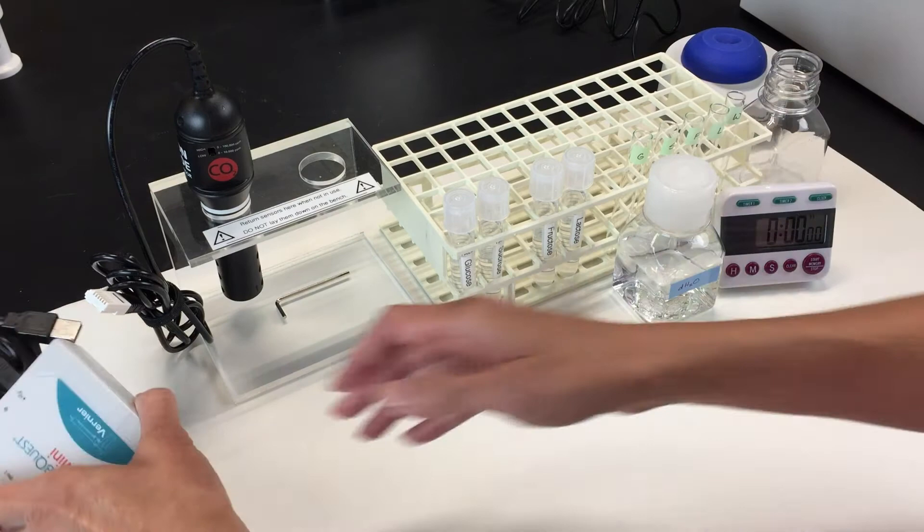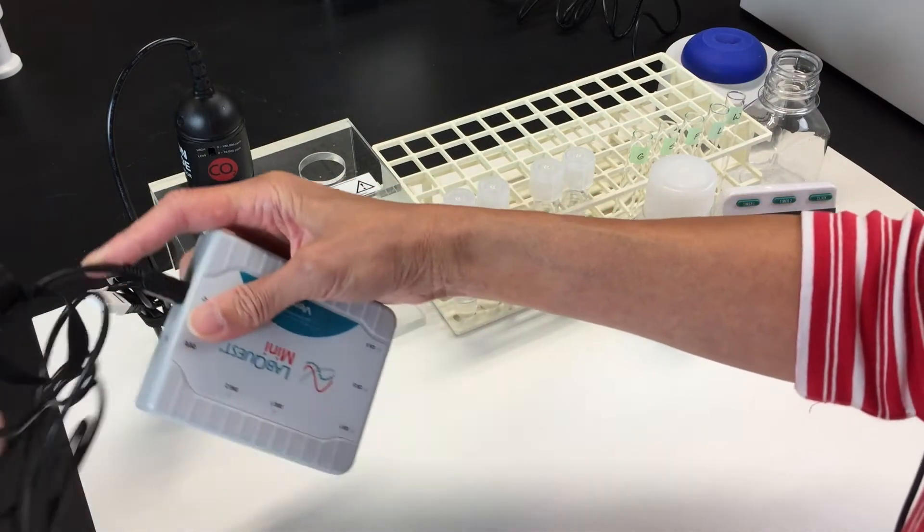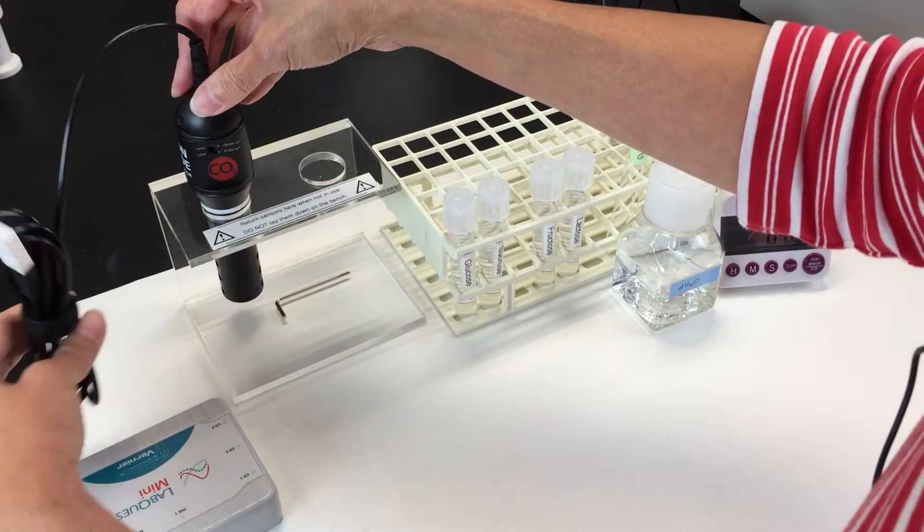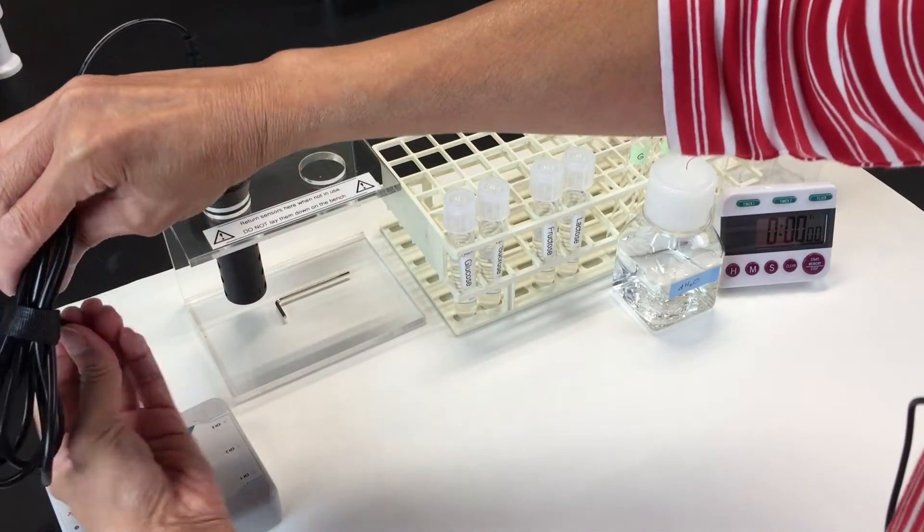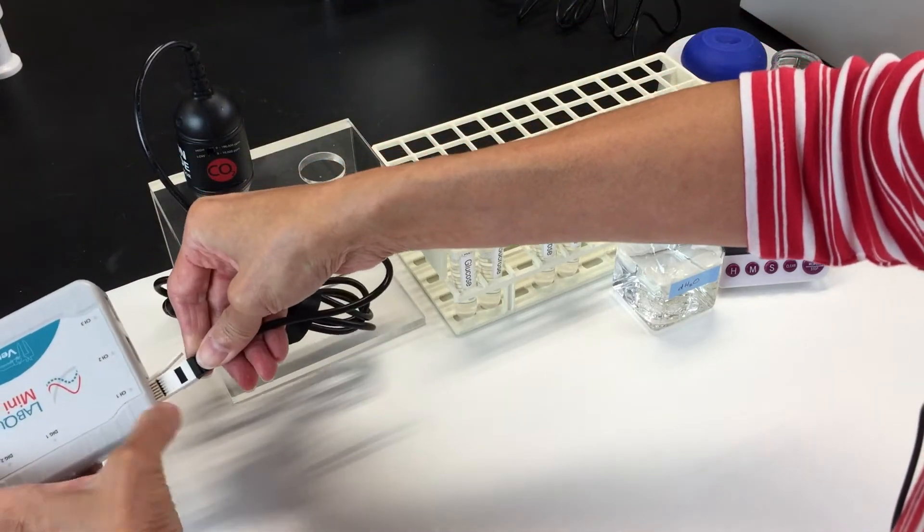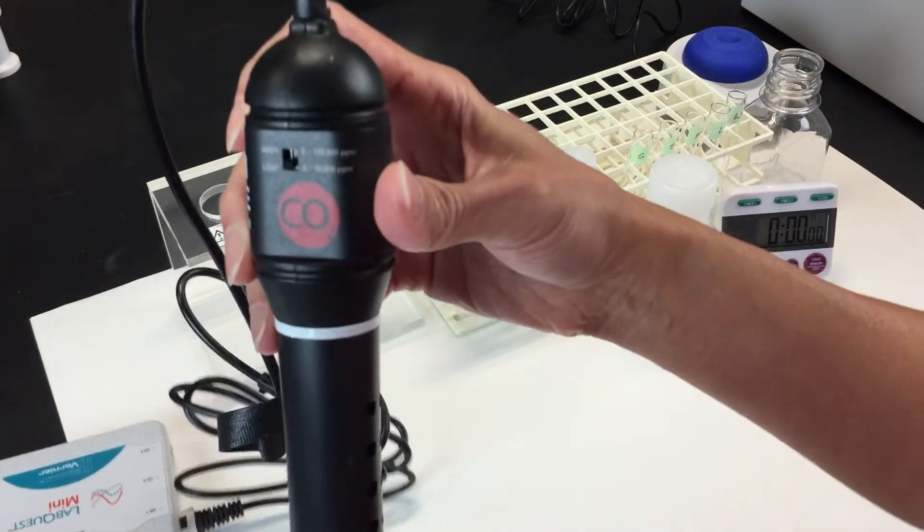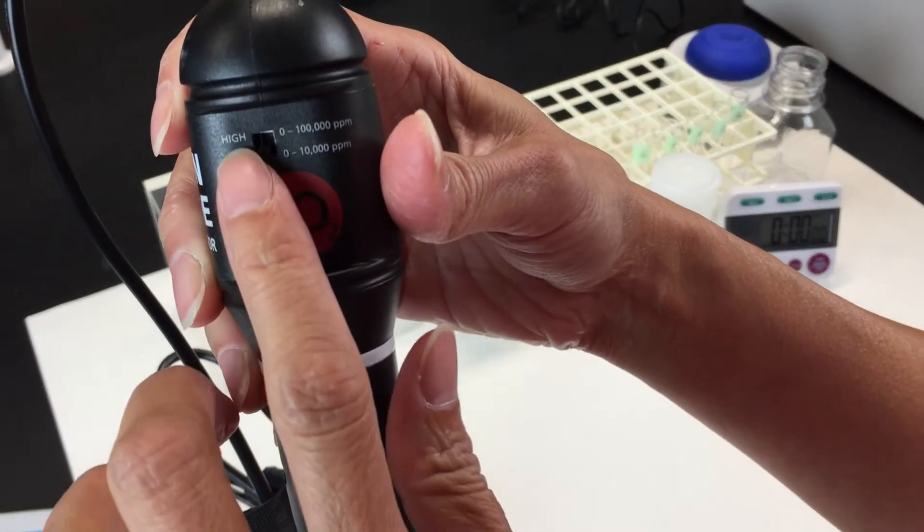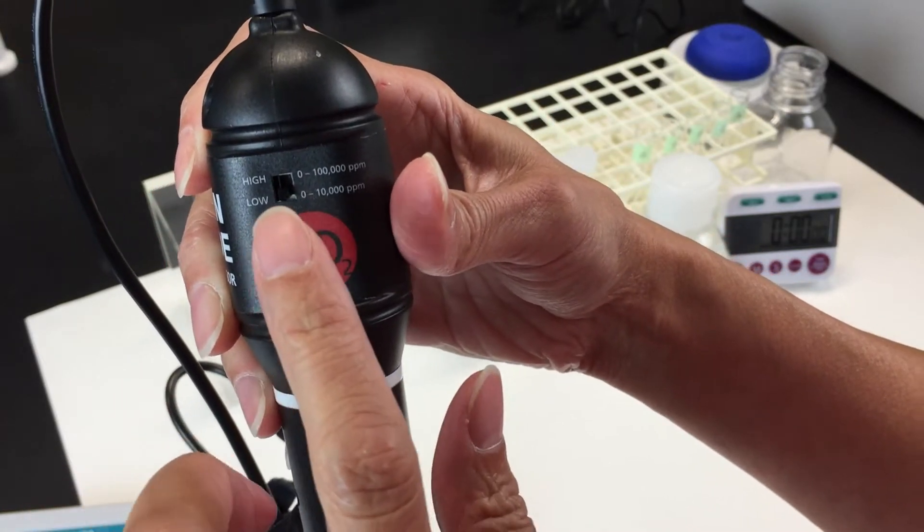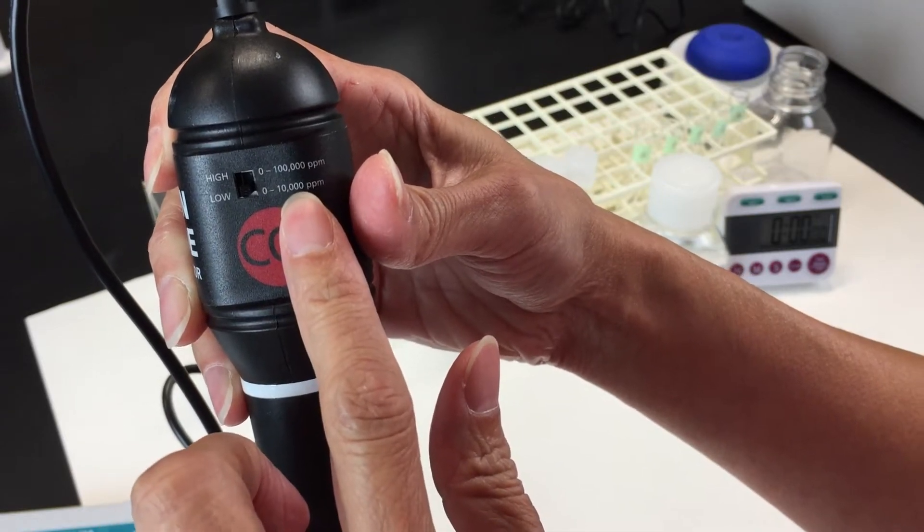Set up your equipment by plugging your LabQuest Mini into your computer. Take your carbon dioxide sensor and plug it into channel 1. Your carbon dioxide sensor has two settings, a high setting and a low setting. You want to make sure that it is on the low setting or 0 to 10,000 parts per million.